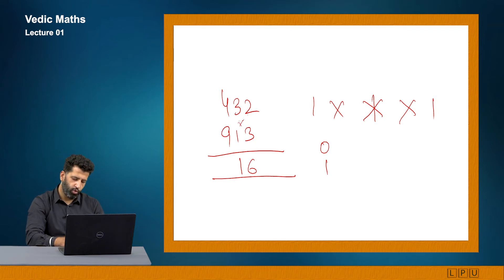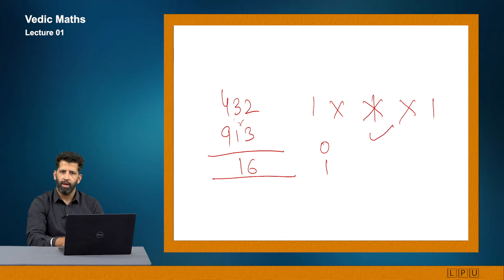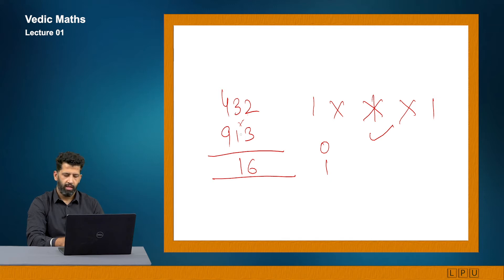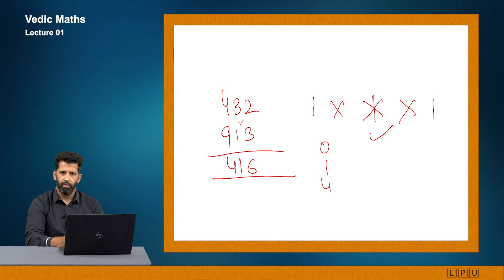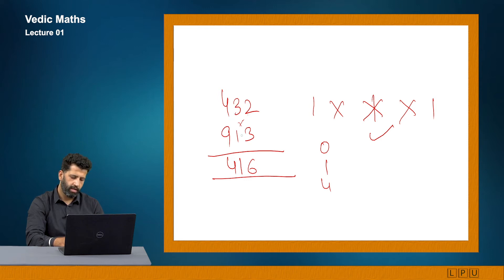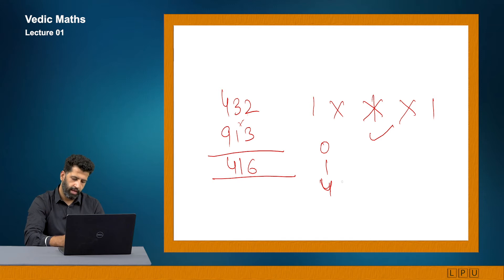In the middle step, multiply 2 with 9, 4 with 3, and 3 with 1 (middle column with itself). So 2 into 9 is 18, 4 into 3 is 12, and 3 into 1 is 3. So 18 plus 12 plus 3 is 33, plus 1 carry forward gives 34. Write 4 and carry 3.